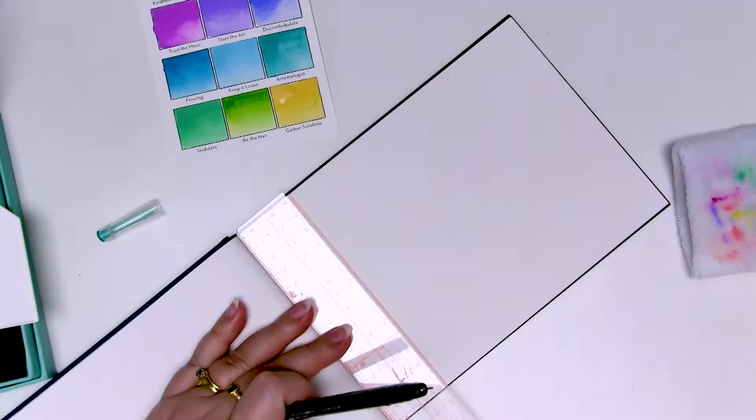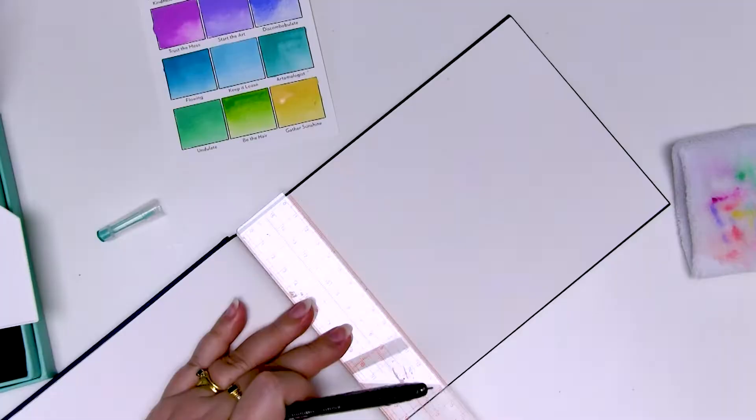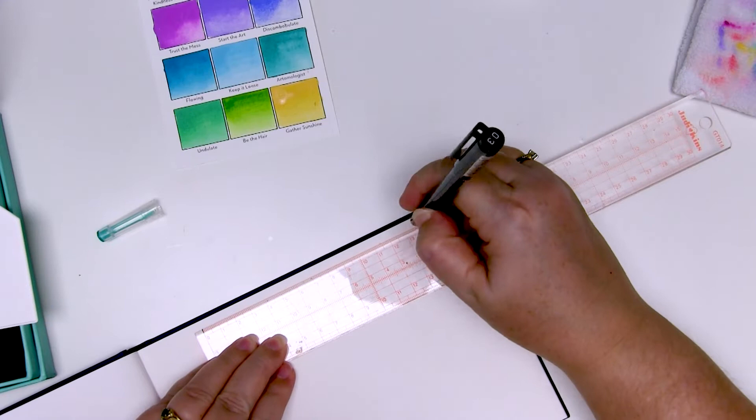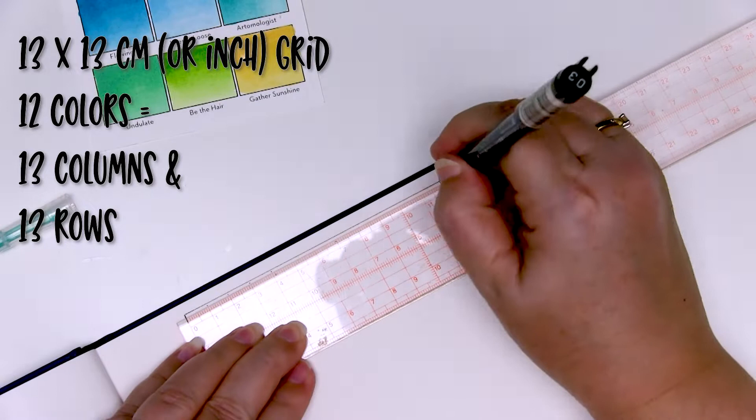I've started by creating the color swatch card included with the set just so I can see what each of the colors looks like individually. Now the next thing I'm going to do is make a color mixing chart.